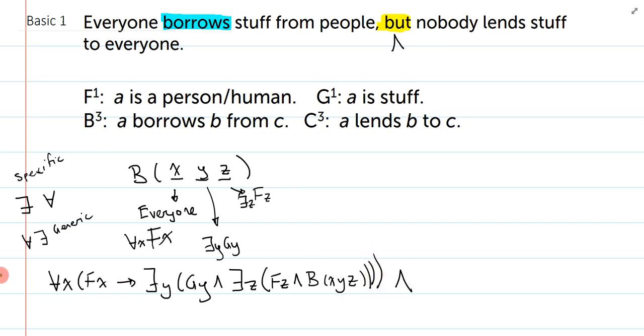Okay. That's the first half of the sentence. It says, for all X is all people, Y is some stuff, Z is some person, and all people borrow some stuff from some person. There you go.